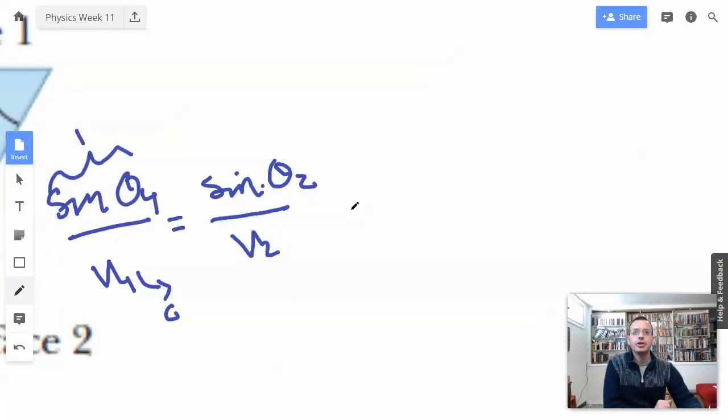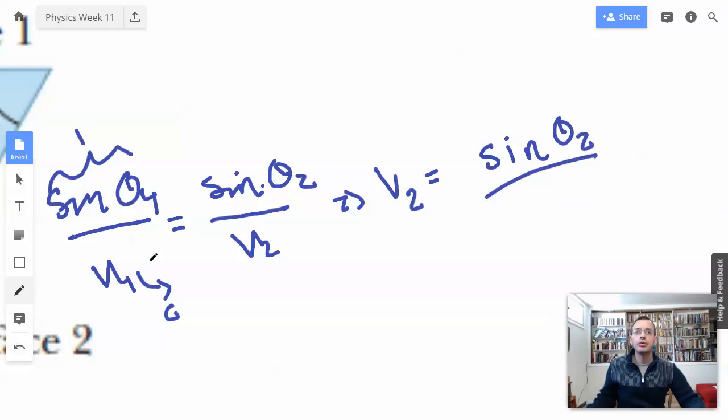We don't know what V2 is. So we need to find V2, which we can do. So I'll make this little arrow thing. V2 equals sine of theta 2, and then we'll multiply this by V1.